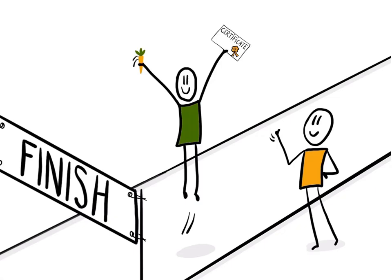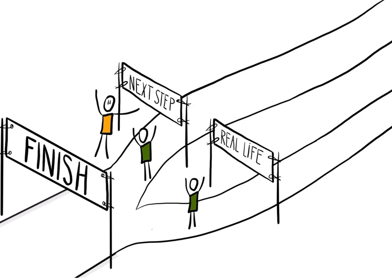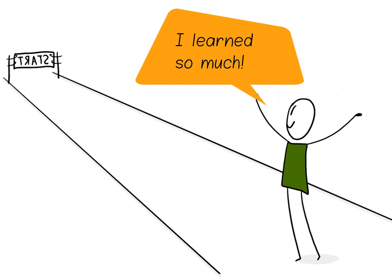An example of an extrinsic reward could be to earn a certificate or a praise from the teacher. An example of an intrinsic reward could be that a student is interested in the subject or that he or she can apply the knowledge they just learned in a new case. In other words, that a student sees that his or her effort in learning new things pays off in a new context.